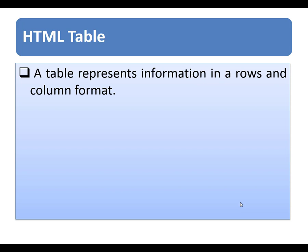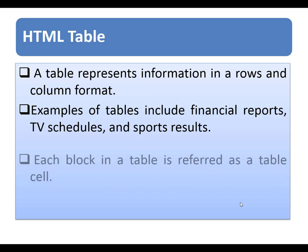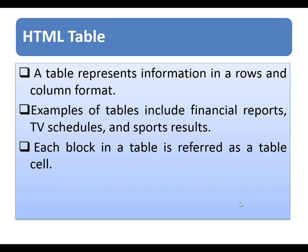HTML tables allow web developers to arrange data in rows and columns. A table represents information in a rows and columns format. Examples of tables include financial reports, TV schedules, and sports results. Each block in the table is referred to as a table cell. In HTML, a table is written out row by row.